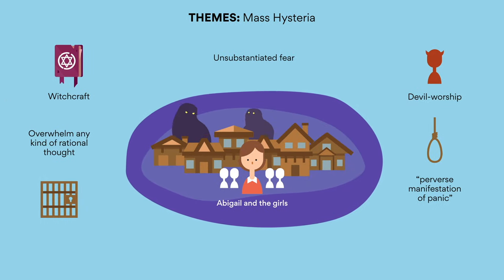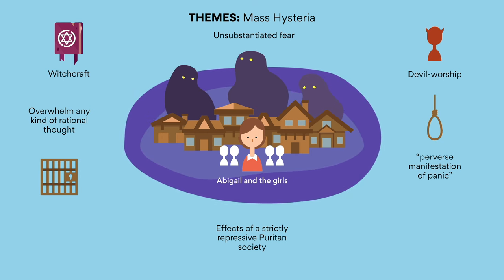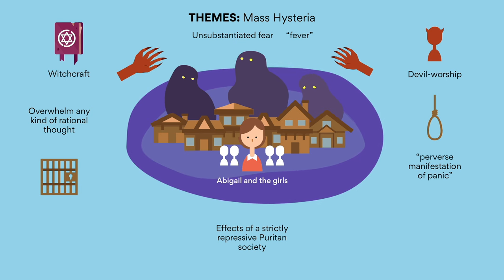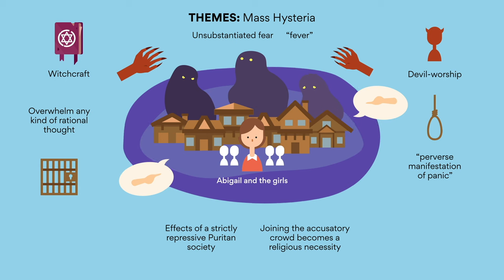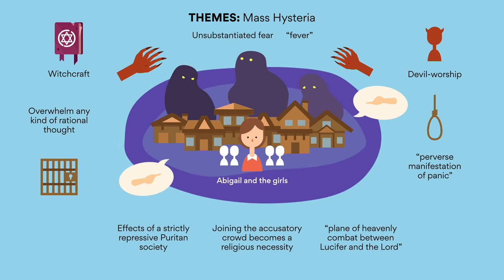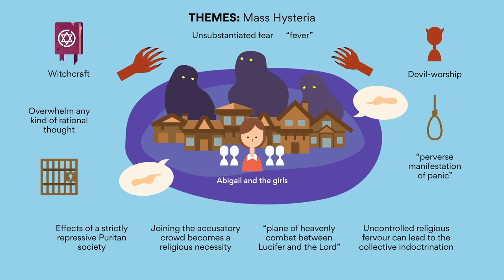Miller uses this illustration of hysteria to show the effects of a strictly repressive Puritan society. Although some residents of Salem manipulate the witch hunt for their own benefit — such as Abigail — the majority of townspeople are launched into a terror-fuelled fever of their genuine belief that the devil is running amok in Salem. The strict theocracy of the town exacerbates the crisis, as joining the accusatory crowd becomes a religious necessity — a virtuous plane of heavenly combat between Lucifer and the Lord. The play demonstrates how uncontrolled religious fervor can lead to the collective indoctrination of black mischief, where panic clouds all reason.